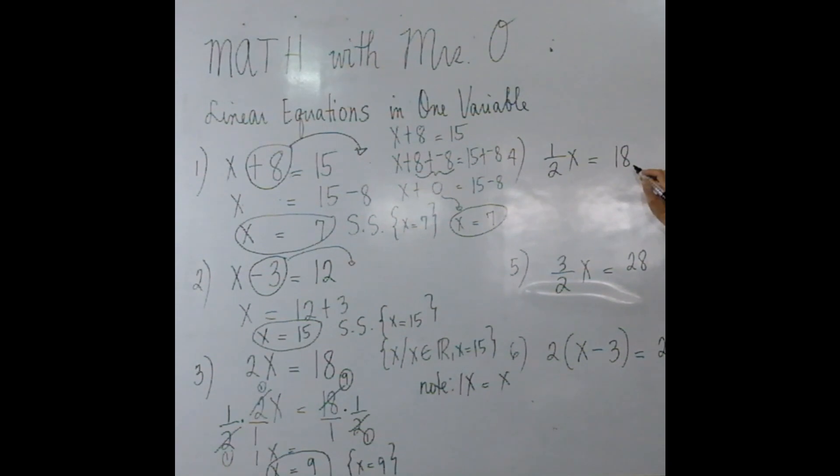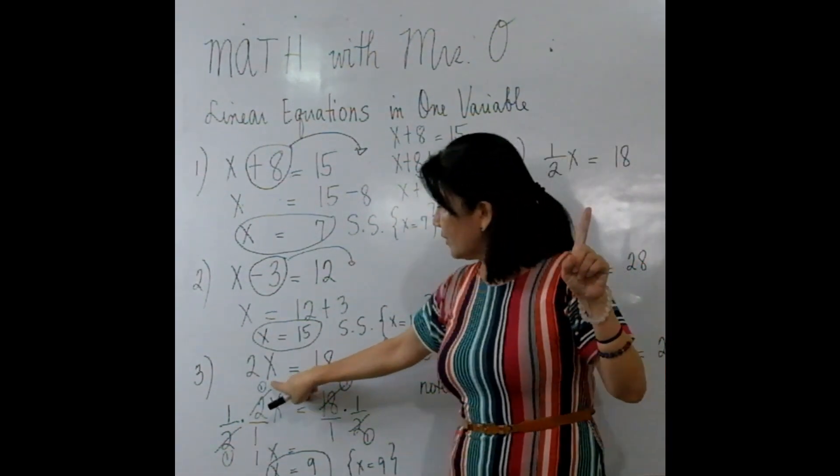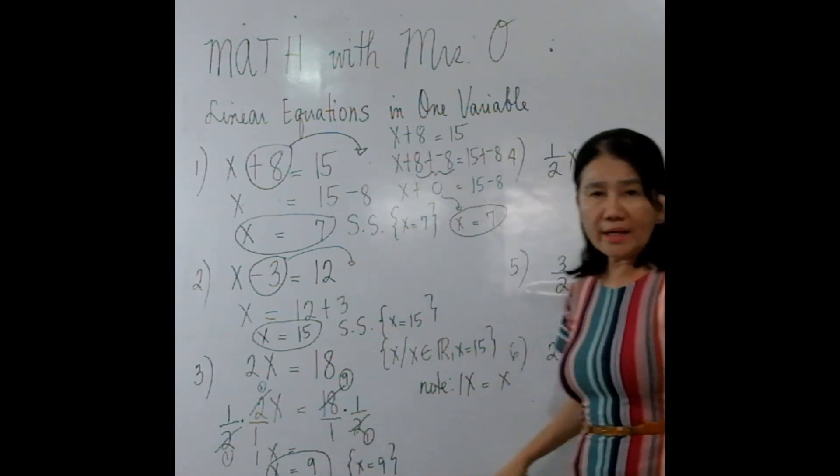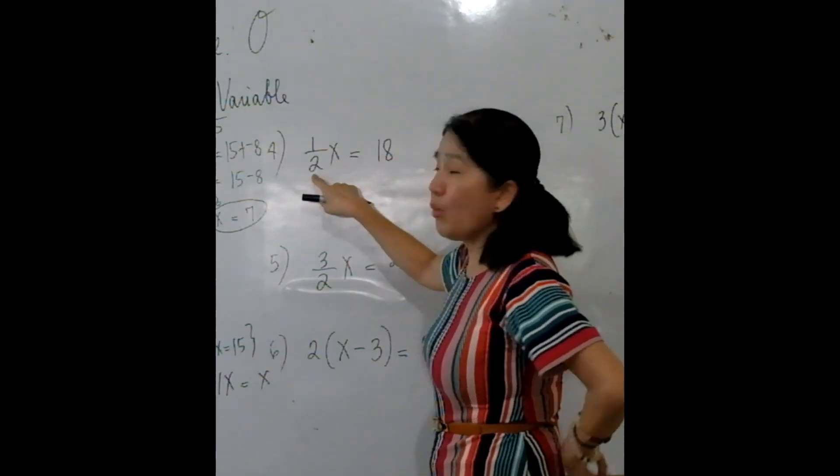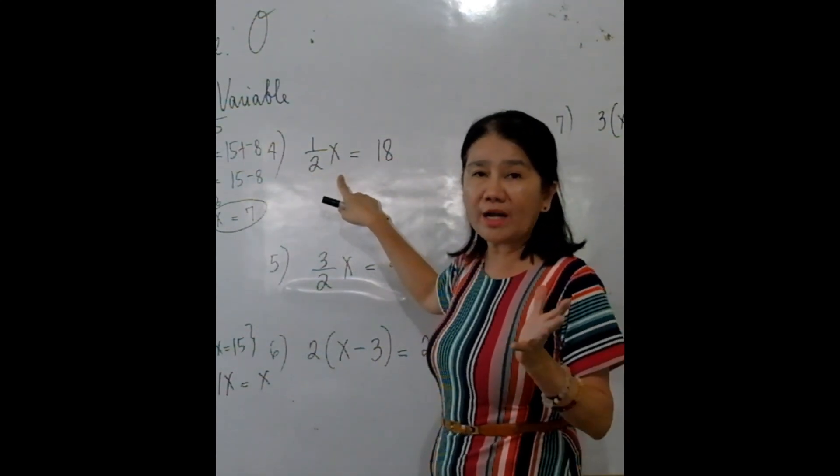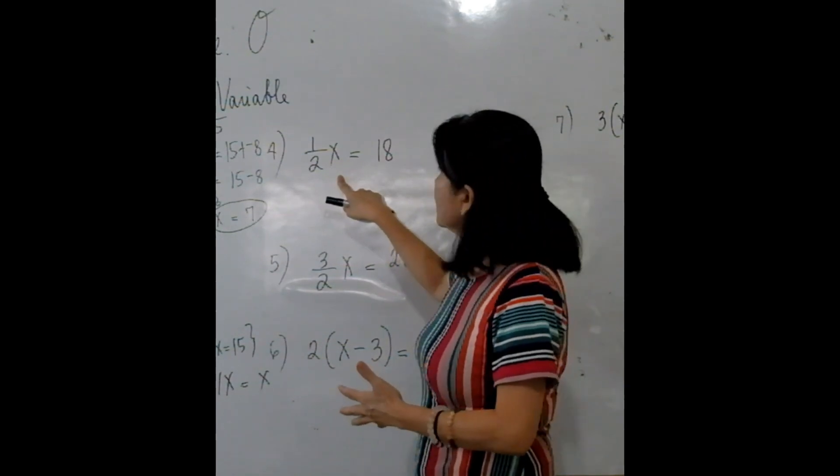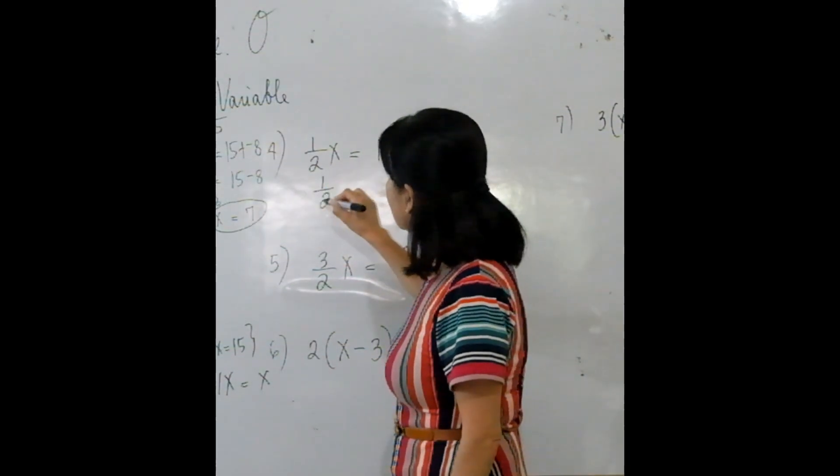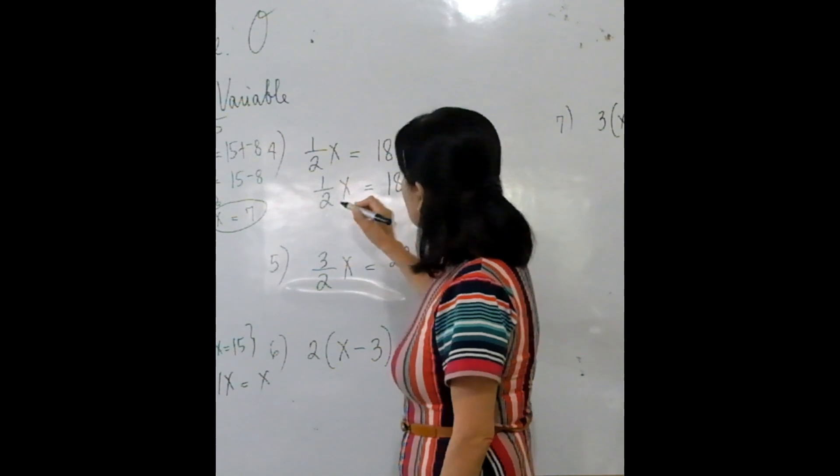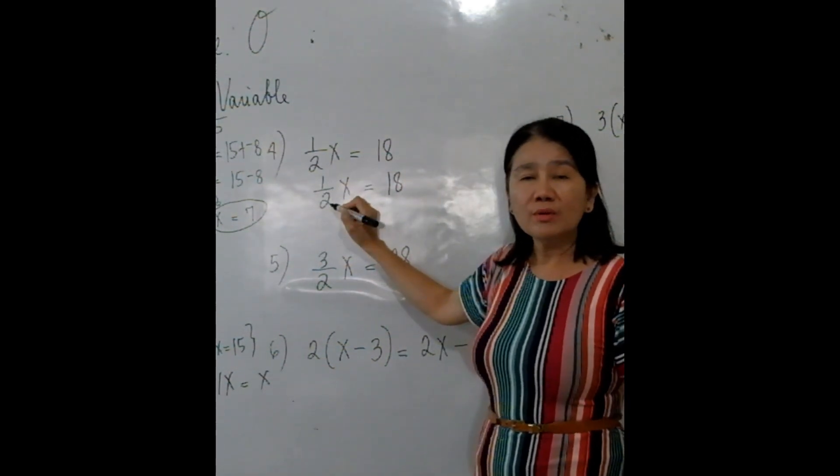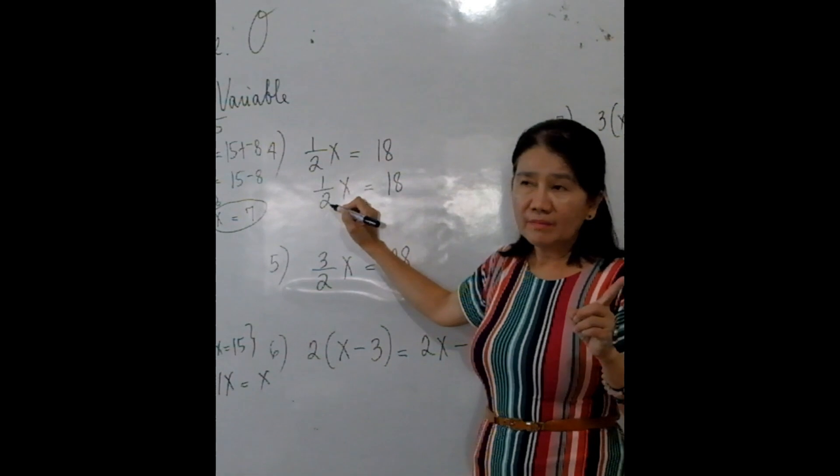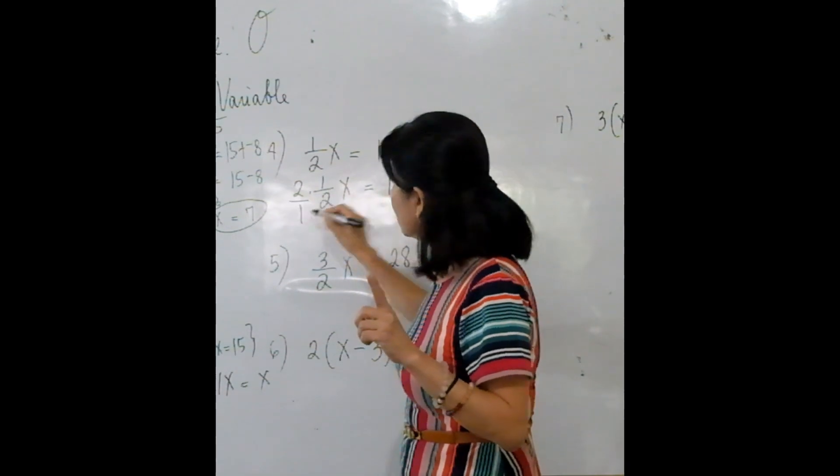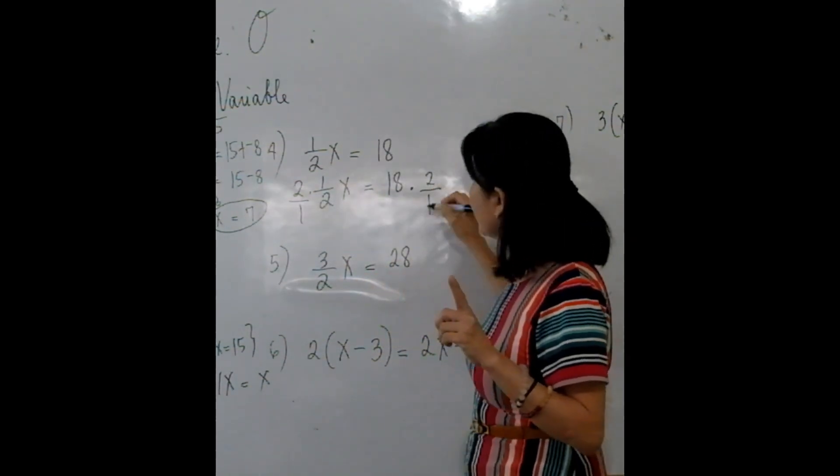Number 4. Here in number 3, X is multiplied to 2. What if we have 1 half multiplied to X? So now we have a fraction. It's the same thing. Since your main goal is to isolate X, you have to multiply a number which when multiplied to 1 half will give you 1. And what is that number? The reciprocal of 1 half, which is 2 over 1, multiplied to both sides.